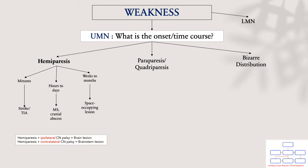If it's hemiparesis, ask yourself what is the onset and time course of the presentation. If it is hyperacute — within seconds to minutes — it is most likely a stroke or TIA. If it's within hours to days, you should consider MS, multiple sclerosis, or cranial abscess.